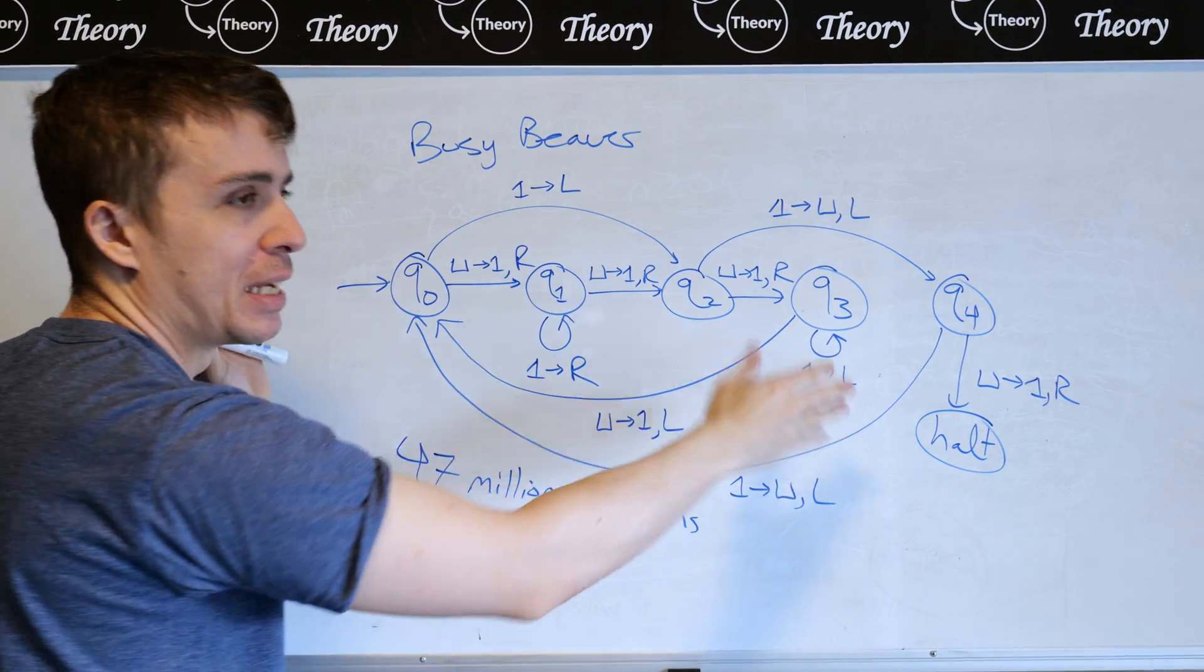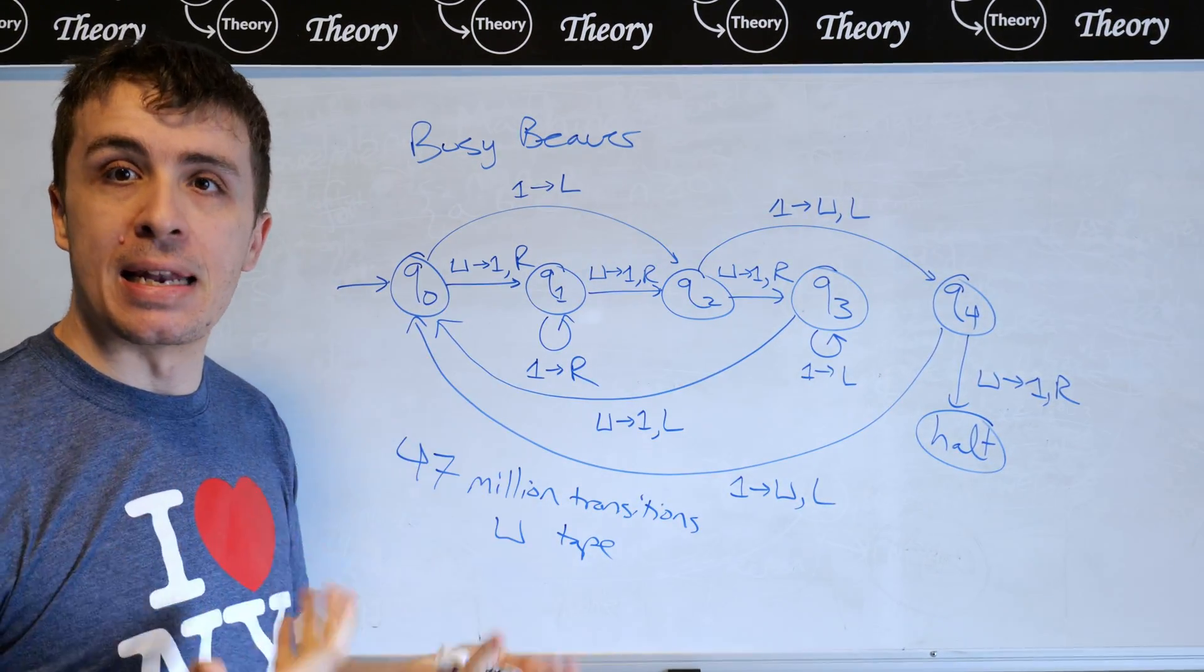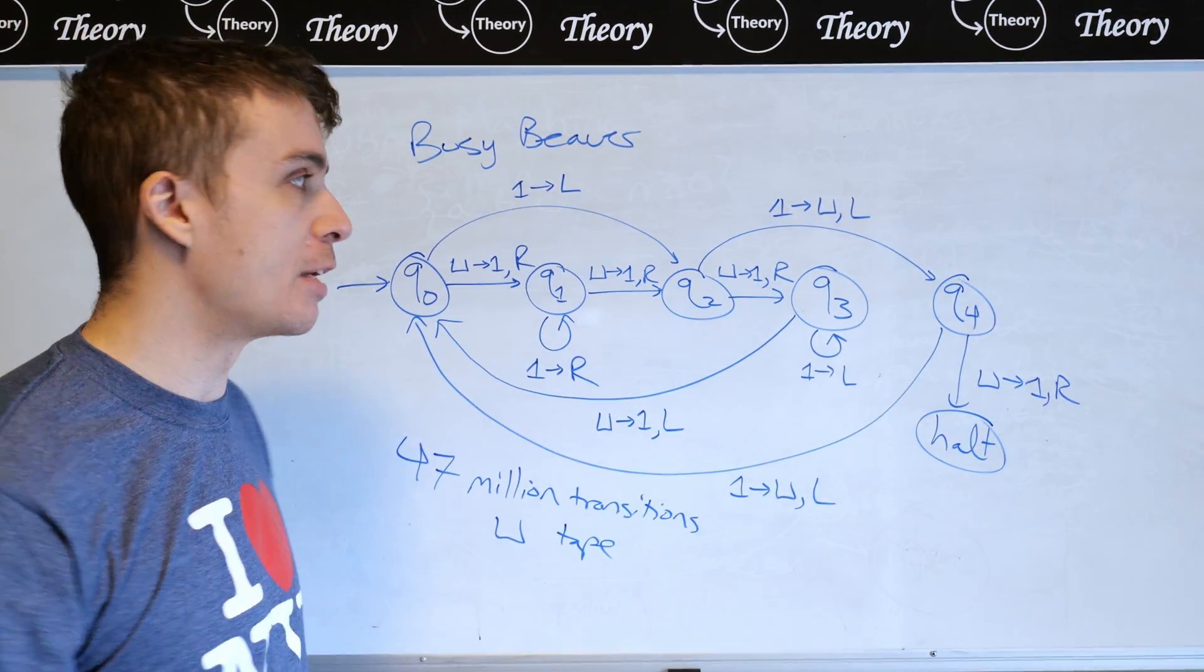So the busy beaver problem is asking, how long can a Turing machine run with a certain number of states? In this case, five, forget the halt state. So with five states, and how many tape symbols that you're allowed.